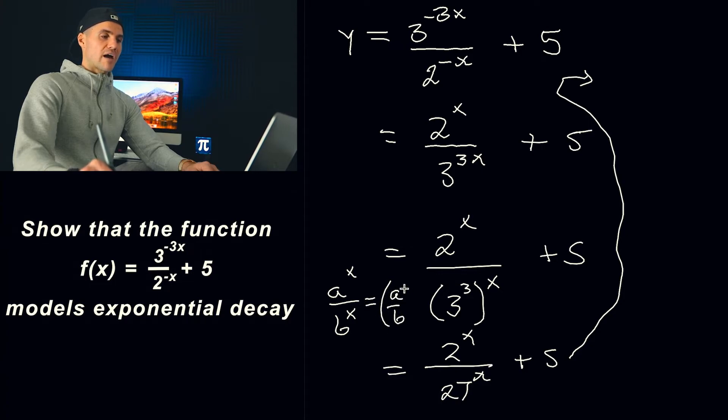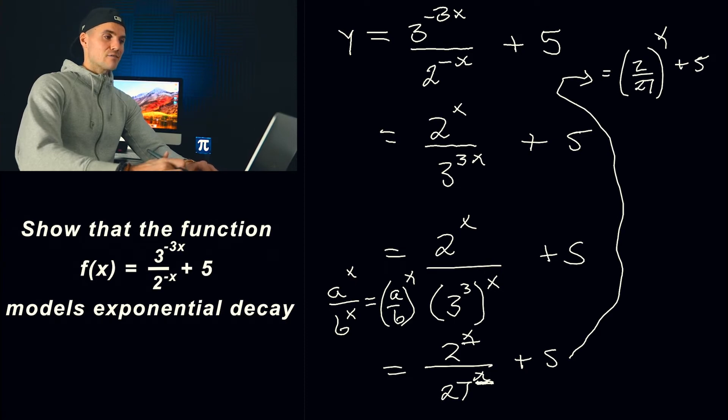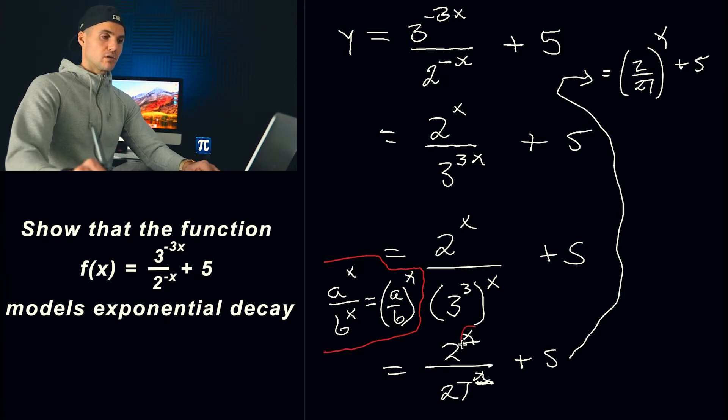remember that if I have two values in a fraction to that same exponent I can pretty much just like factor out quote unquote that exponent and have the fraction like that so just notice here we got an x we have an x so I could rewrite this as 2 over 27 to the power of x plus 5. In order to use this rule it has to be the same exponent so we couldn't use it up here because we had this 3x like that